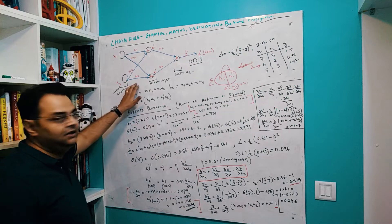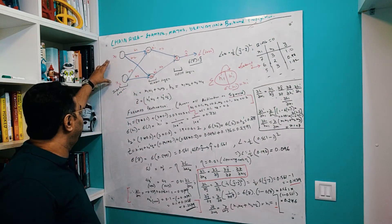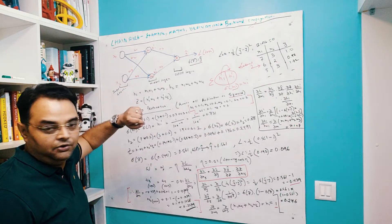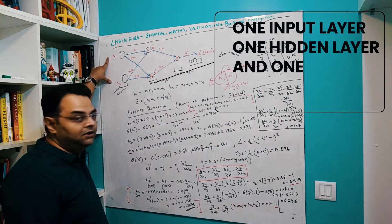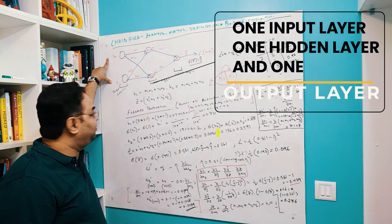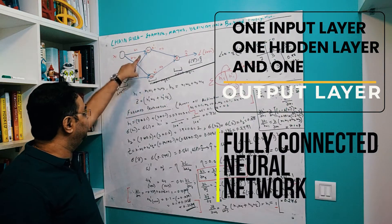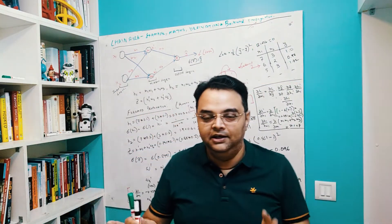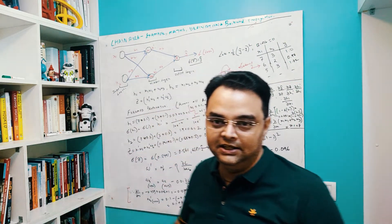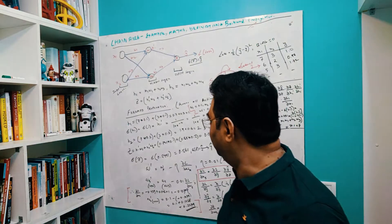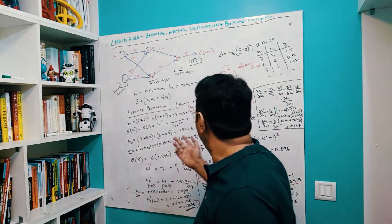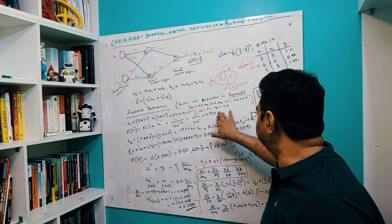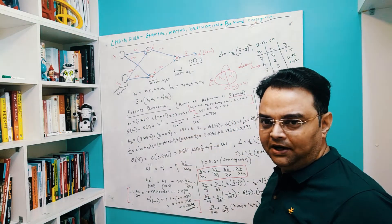I've defined my neural network with one input layer with two neurons, one hidden layer with two neurons, and one output layer. It's a fully connected layer, meaning every neuron is interconnected. The weights are w1 through w6, and I'm reading out their values — check the link in the description to download the full calculations.